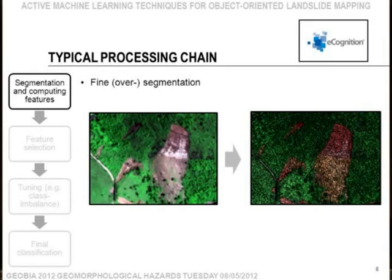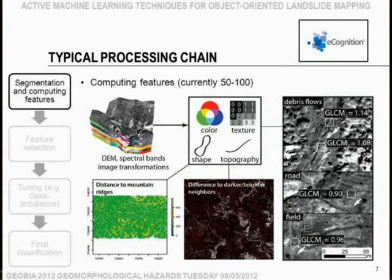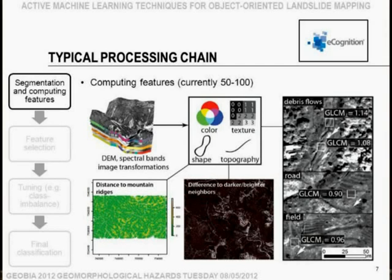I will first show the typical passive learning processing chain — going through this quickly since it is already published work. We start with a fine segmentation and compute for each object a number of features: texture measures related to local flow direction, difference to neighbors, topographic variables, shape, color, and so on. Depending on the images, we work with 50 to 100 features. The problem is that a priori you don't know which of those features are actually valuable for your classification task.